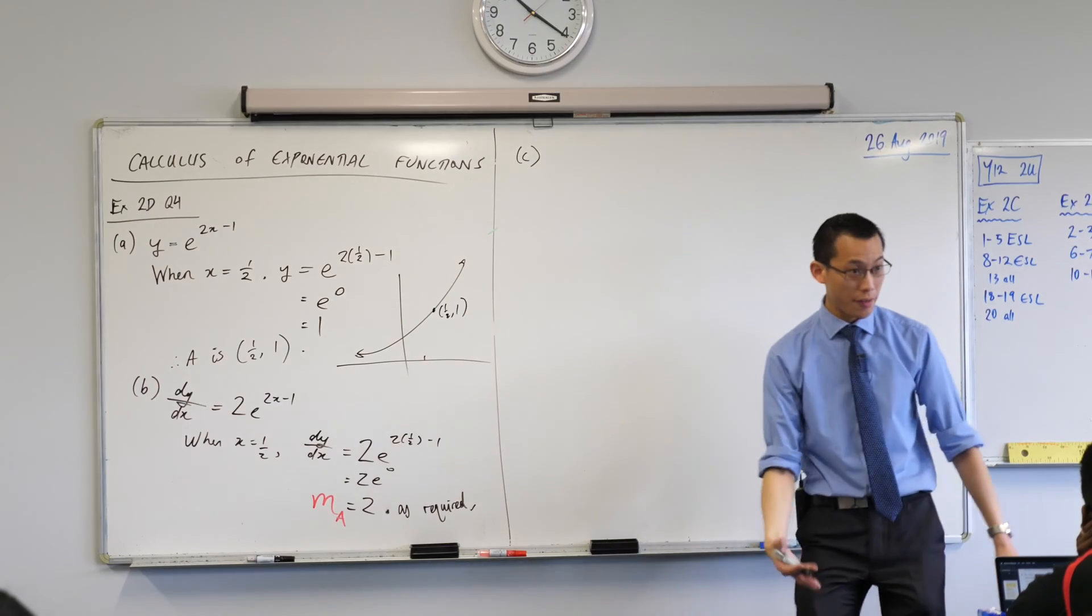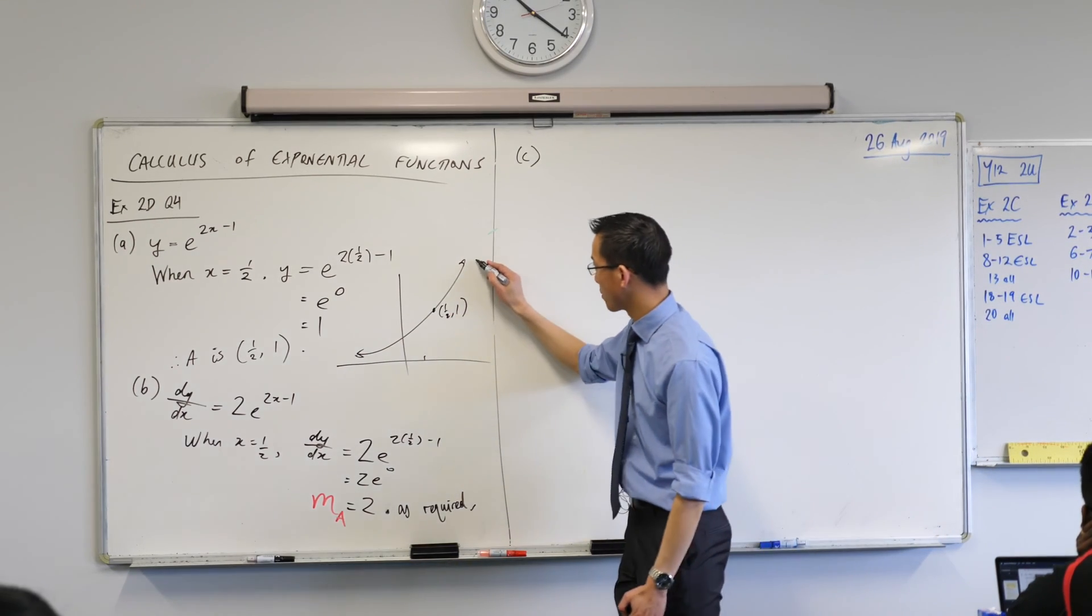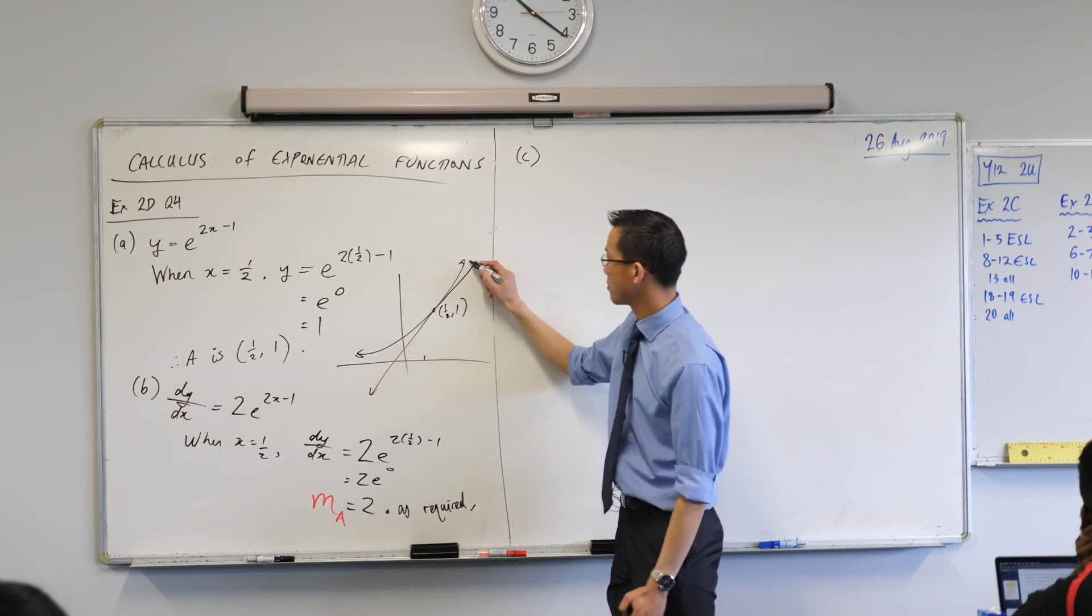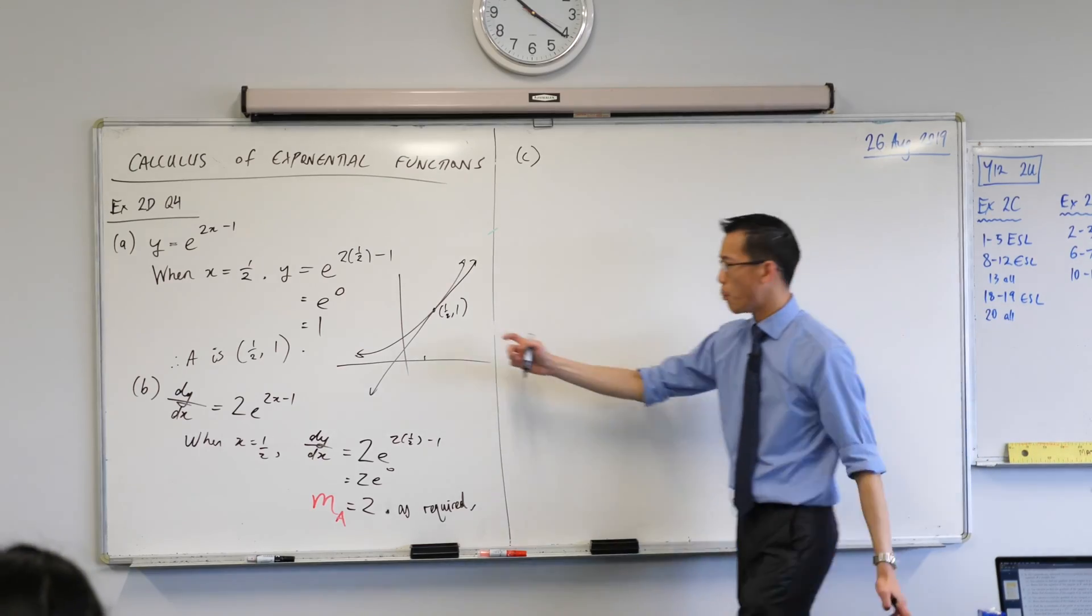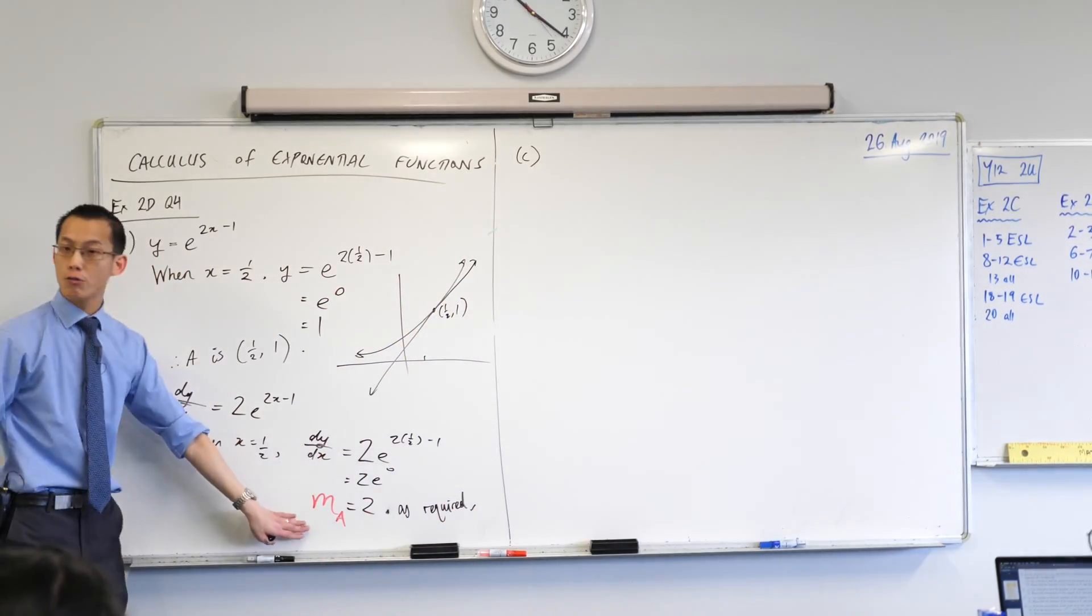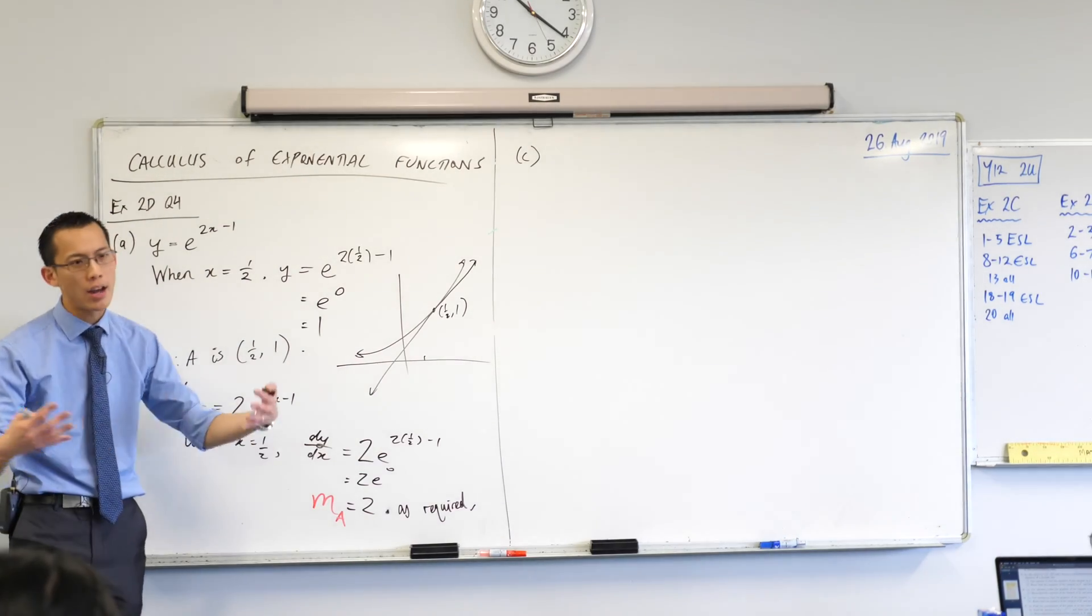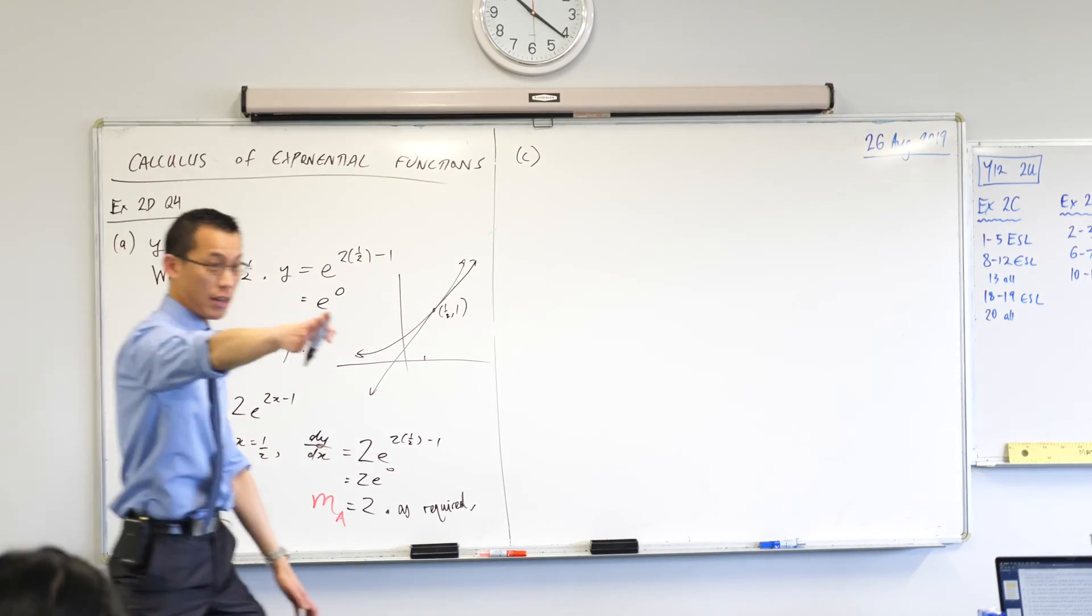Right? So what I'm trying to find is the equation of the tangent at that spot, which I guess will look something like that, right? That's the line I'm trying to find, what its equation is. Now I already know a point that goes through it, and I've also just in part B found out the gradient at that point. So how do I combine that to get the equation of the line? Point gradient form. Point gradient form. Thank you very much.